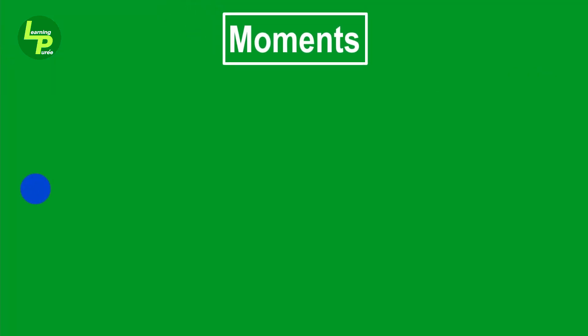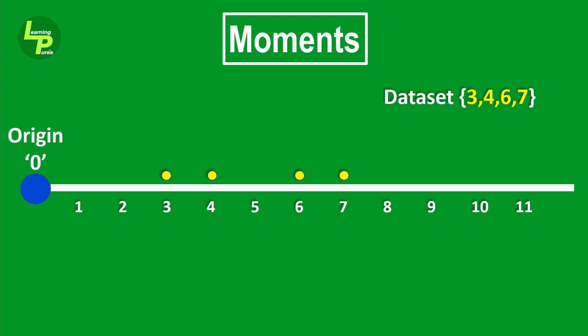The origin or point zero is the reference point. This data set is spread over on this number line. These are also the distances from the origin or point zero.